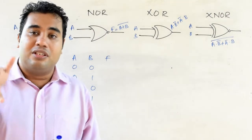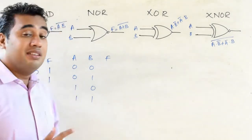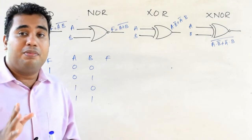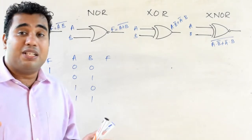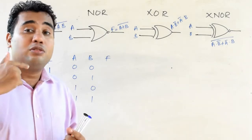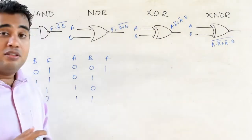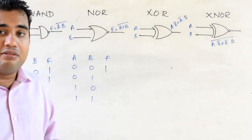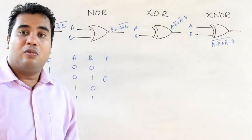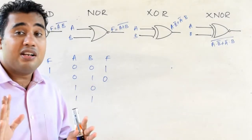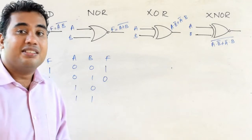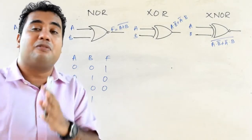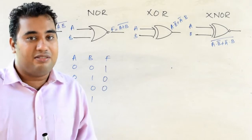Now let's consider the NOR gate. When you input 0 and 0, the OR gate generates 0, and through the NOT gate it becomes 1. When inputs are 0 and 1 or 1 and 0, the OR gate gives 1, and through the NOT gate it becomes 0. When inputs are 1 and 1, the OR gives 1 and the NOT gate gives 0.